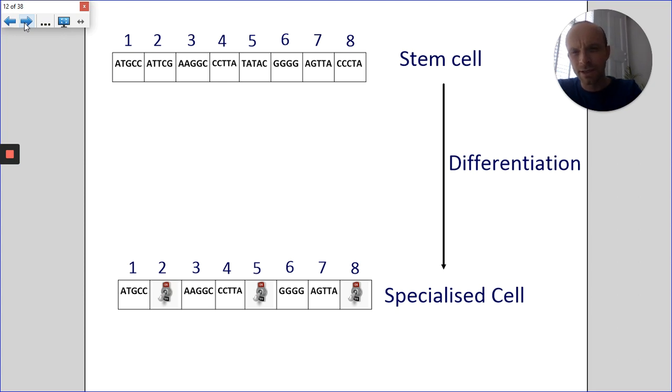So you can see that gene number two, gene number five, and gene number eight in the specialized cell are switched off. Now, the fact that those genes are switched off, that genetic information is switched off within that cell. So that is what makes the cell specialized.